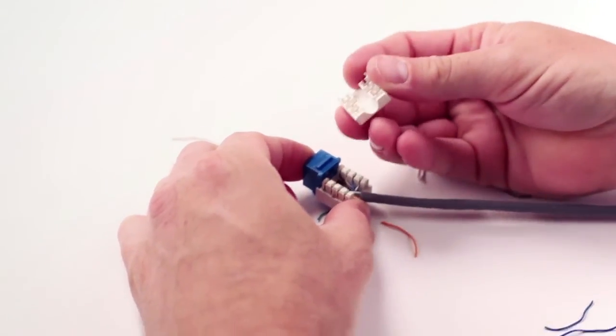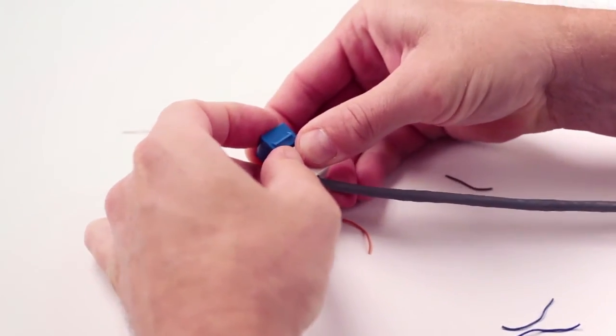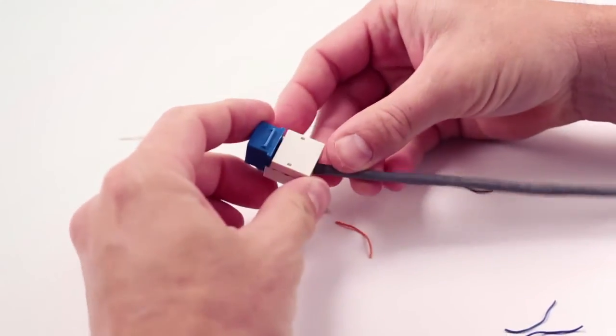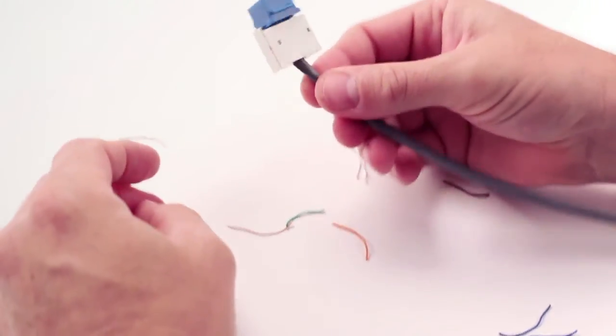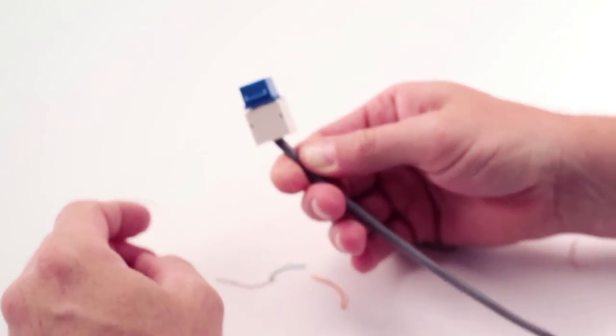Put the cover on it. You want to try to make sure that the jacket is always hidden far enough up in there that you can't see the actual wire sticking out of the back of the connector.